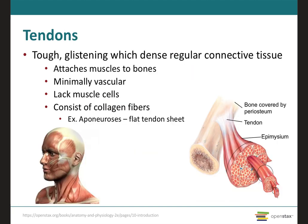In contrast to the skeletal muscle, the tendons are going to be very tough, sort of glistening, white, dense, regular connective tissue structures that are going to attach the muscle belly to the bones. And because they have this whitish color, they don't have a lot of blood vessels. They will also lack muscle cells and will consist primarily of these parallel arrangements of collagen fibers.